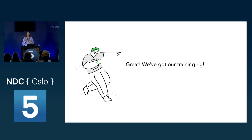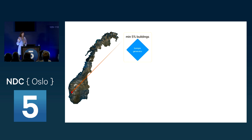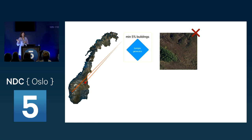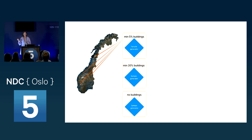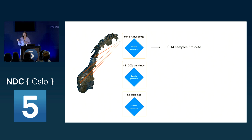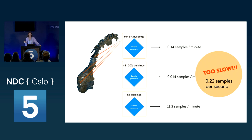But we need to make sure the data flows fast enough. The 5% buildings rule sample generator keeps missing — it looks for data, it doesn't match the criteria, and this takes time. Looking at actual production numbers: 0.14 samples per minute for the 5% rule, even worse for 20%, and the no-buildings is a bit better but still not much. In total that gives 0.22 samples per second — pretty far off from the 24 we need.